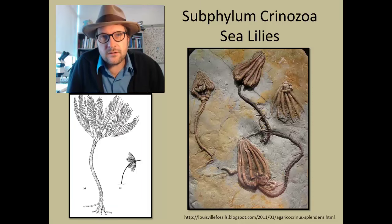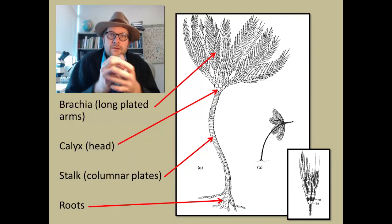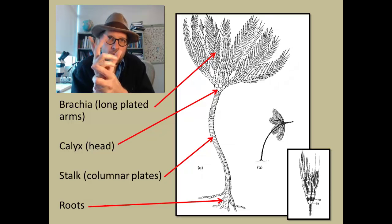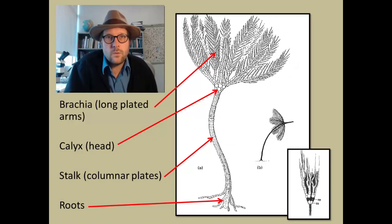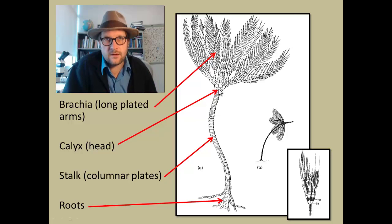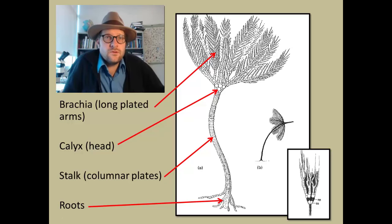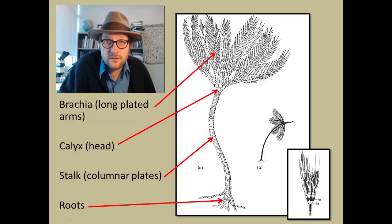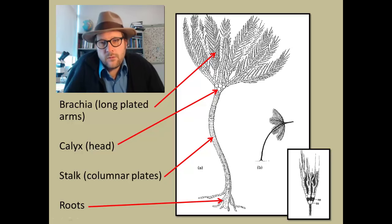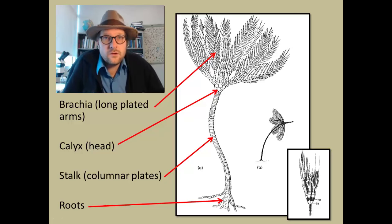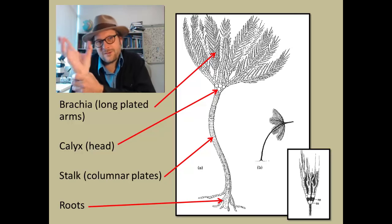The anatomy of the crinoid body is divided into the brachia — the long plated arms that wave around gathering food — the calyx, which is where the mouth and the gut are present, and then supporting the calyx is a long stalk of columnar plates made out of calcite. The stalk is akin to stacked coins and does not allow for much movement. At the base of the stalk are the roots, which hold the crinoid fast to the sea floor. So crinoids are analogous to a kite that is tied down by a string on the sea floor, and the brachia are the mobile parts of the body.